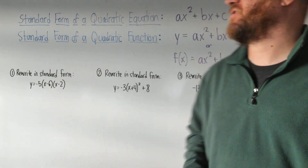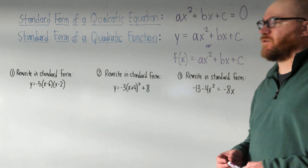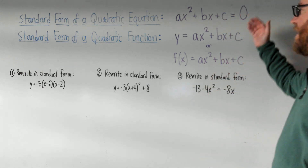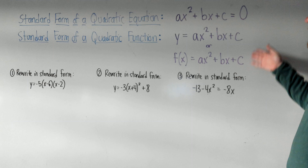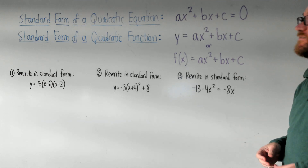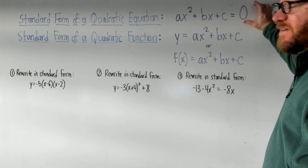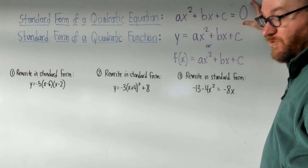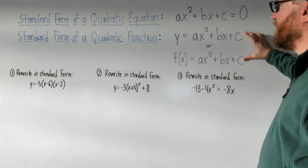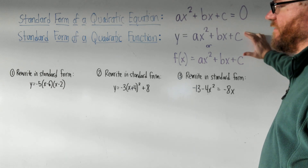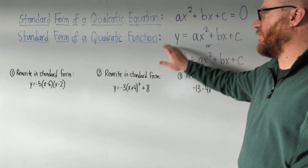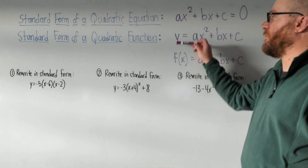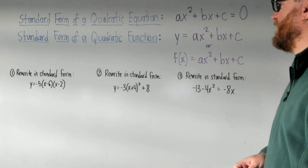In this video we're going to talk about standard form for quadratic equations. I already have standard form written here — three different ways. The top one is for a quadratic equation, meaning that it's equal to zero. The bottom two are for a quadratic function. If you see the word function, that means there will be a y involved, or an f of x involved. Remember, these two are interchangeable — they mean the same thing.